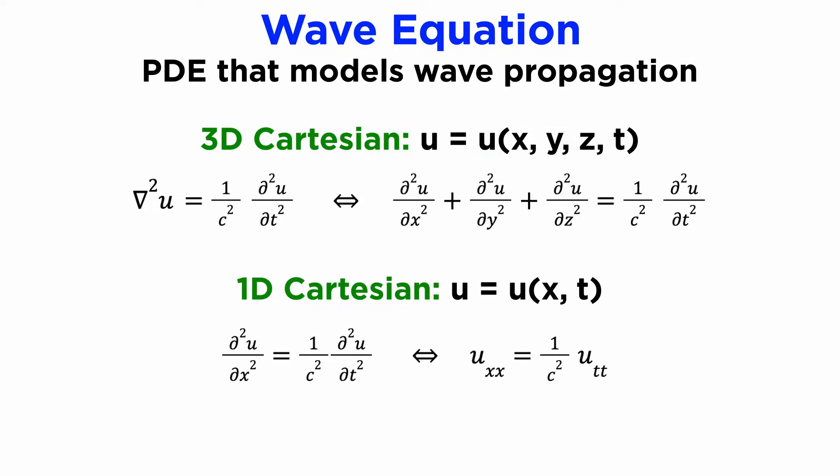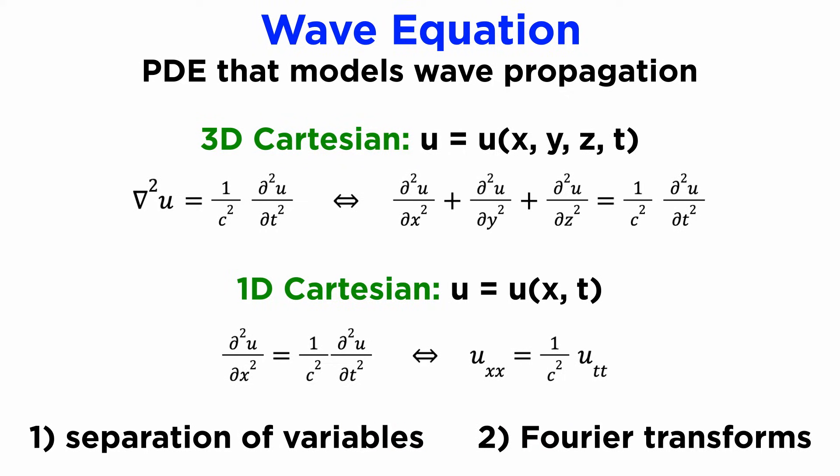We will initially focus on the 1D case of the wave equation, and that will be uxx equals 1 over c squared times utt, where c is a constant representing the speed of the waves, and we can verify that the wave equation is a hyperbolic PDE, unlike the elliptic Laplace equation we looked at previously. We will show two ways to solve the wave equation, first using separation of variables, and second using Fourier transforms, both of which we covered in the previous tutorials.